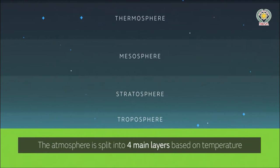Mesosphere is sandwiched between these two hot layers. And after the thermosphere, it is outer space. For your homework, learn the definition of the four layers of atmosphere and also the definition of atmosphere.